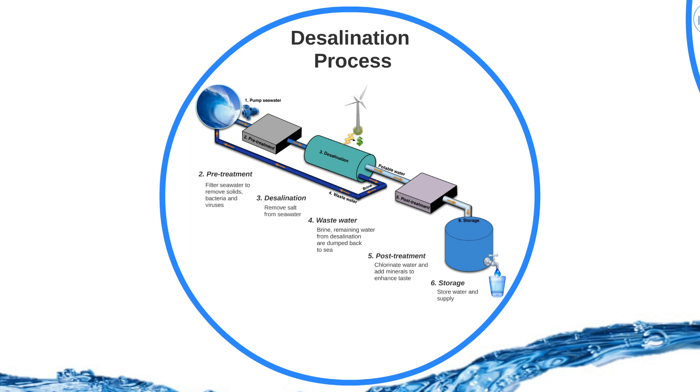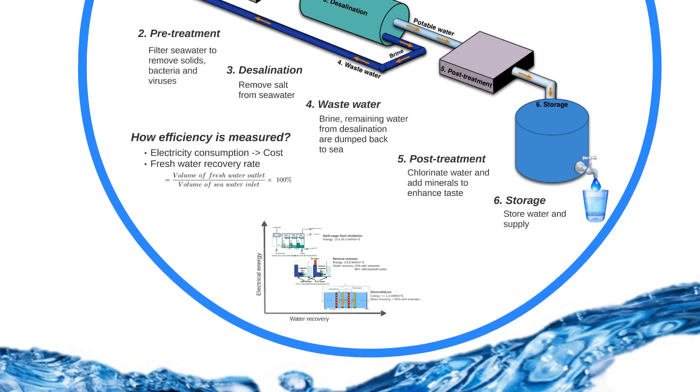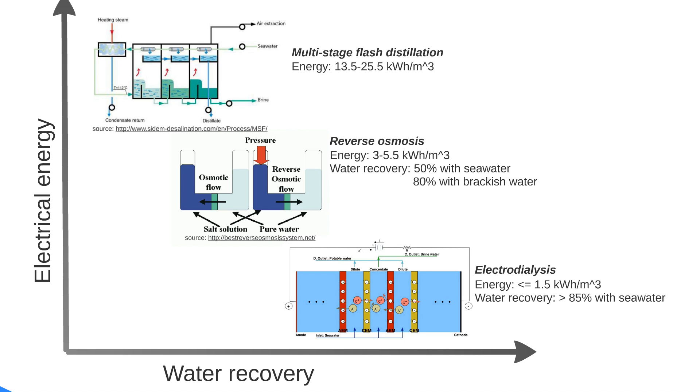Here the energy is mostly spent in desalination stage. There are several desalination techniques. The efficiency of those techniques are usually measured in terms of electricity consumption and freshwater recovery rate. The graph shows different desalination techniques and their efficiencies. A membrane-based electrodialysis is the best available technique which is efficient in both energy and water recovery rate.